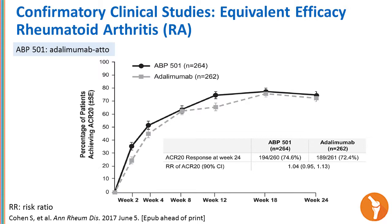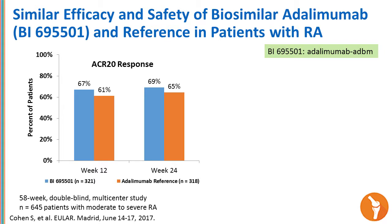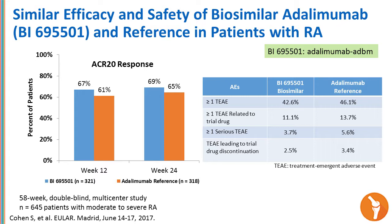The next slide shows efficacy data—a relatively small study compared to those required for originator approval. Here you have adalimumab and biosimilar AVP-501, and looking at ACR-20 responses, they are quite robustly similar. Looking at another adalimumab biosimilar, BI-695501, and the reference product, the ACR-20 responses are quite similar in magnitude. Examining the toxicity profile table also demonstrates very little meaningful difference between these agents.